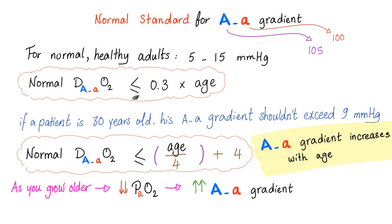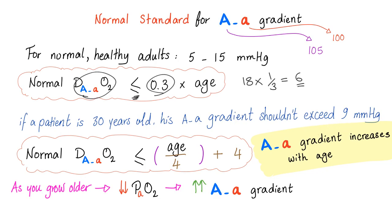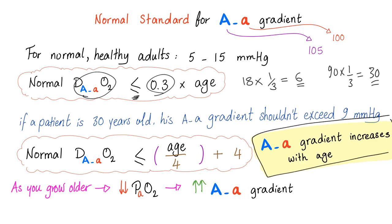For example, if you are 18 years old: 18 times 0.3 equals about 6, so your AA gradient should not exceed 6. If you are 4 or 5 or 6 — that's normal. If it's 7, 8, or 20 — you have a problem in the lung. If the patient is 30 years old, the AA gradient should not exceed 9. If you are 90 years old: 90 times one-third equals 30, so the AA gradient should not exceed 30. The AA gradient increases with age.